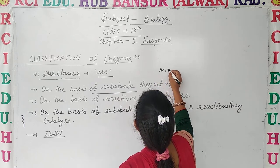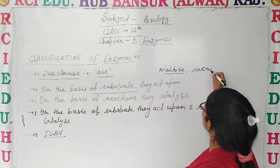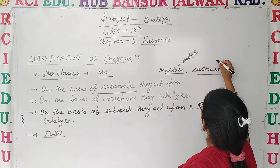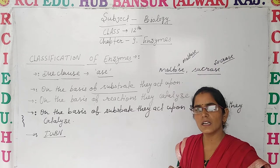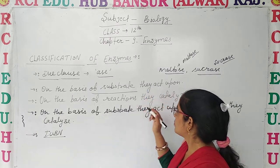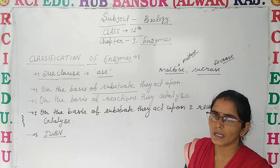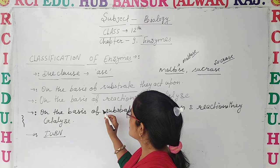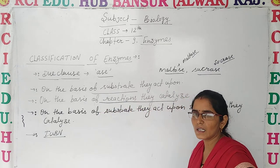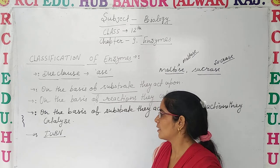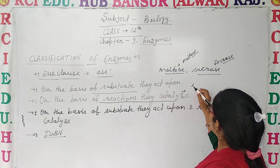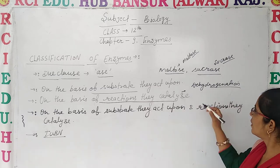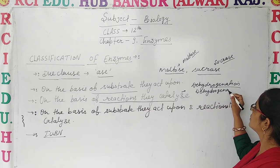For example, if the substrate is maltose, the enzyme is called Maltase. If the substrate is sucrose, the enzyme is called Sucrase. So here we have given a specific name to the enzyme. When we talk about Maltase, it is clear that maltose is the substrate, and Sucrase acts on sucrose as the substrate.